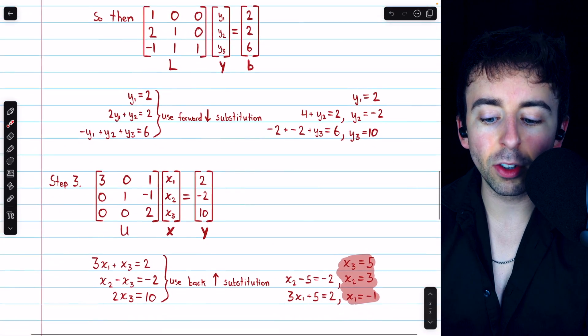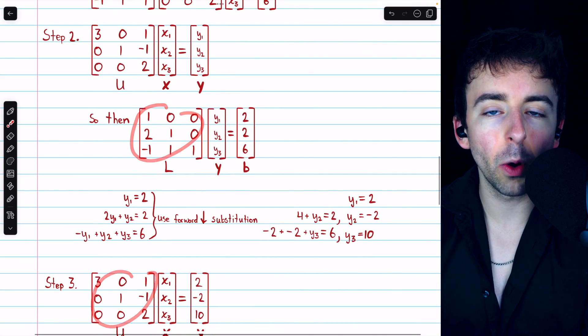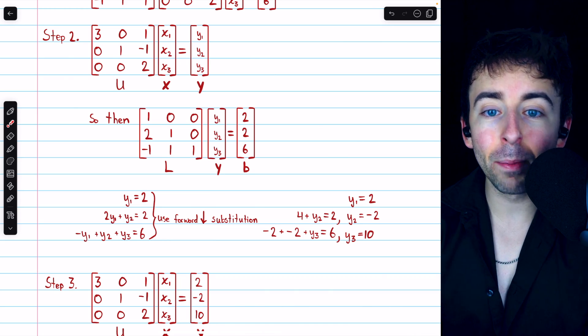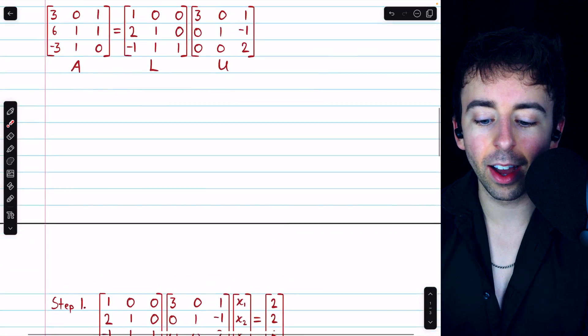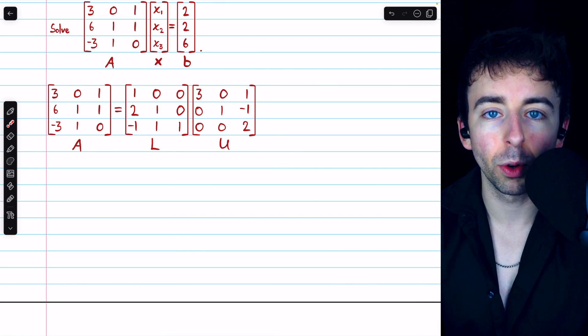Now, this might seem easier than Gaussian elimination because we got to deal with these triangular coefficient matrices, but remember, most of the work was actually done in finding the LU decomposition, which we didn't walk through in this video.